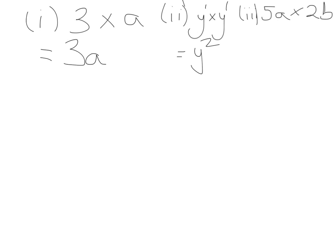In our final example, we have numbers and letters multiplying each other. You do your numbers first: five times two gives me 10. Then A times B — they're different letters, so you can't use indices since they're not the same base. You just stick them together, so we get 10AB.